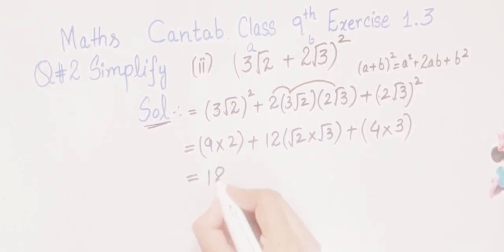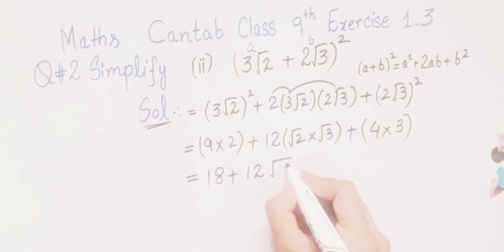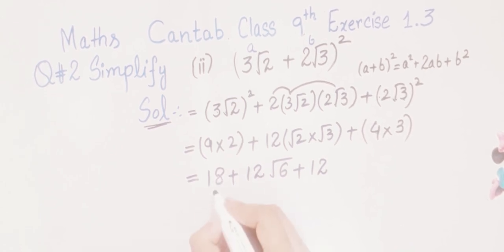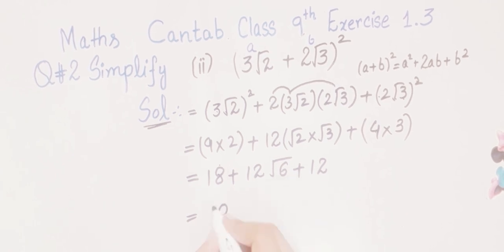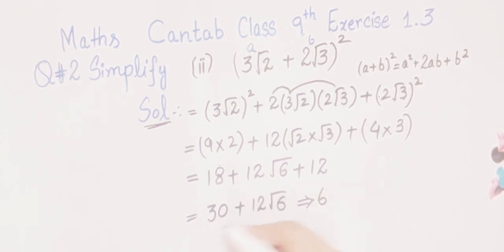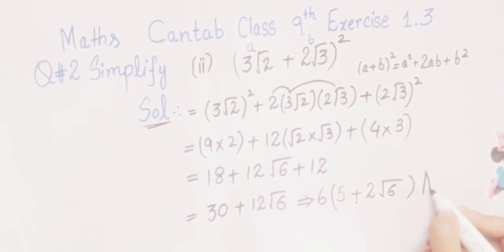So 9 × 2 = 18, then 12√6, then 4 × 3 = 12. We add 18 and 12 to get 30, so the result is 30 + 12√6. We can take 6 as a common factor: 30 divided by 6 is 5, and 12 divided by 6 is 2. So the final answer is 6(5 + 2√6). This is the answer of this part.